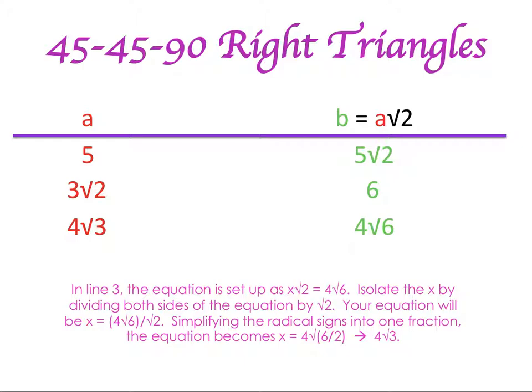For the last one, we had our hypotenuse as 4 times the square root of 6. In this case, I need to set it equal to my formula: X times the square root of 2 equals 4 times the square root of 6. I need to isolate X, so I divide both sides by the square root of 2. My equation becomes X equals 4 times the square root of 6 divided by the square root of 2. I'm going to put the fraction with the square root of 6 over the square root of 2 all inside my radical sign — it really becomes the square root of 6 divided by 2. And 6 divided by 2 gives you 3, so it'll be 4 times the square root of 3. That becomes my leg in the triangle since they gave me my hypotenuse.